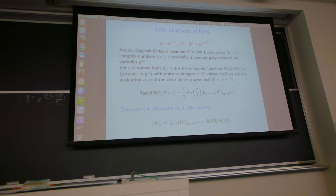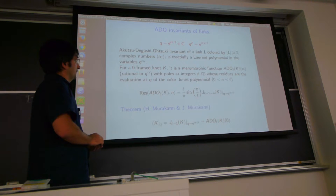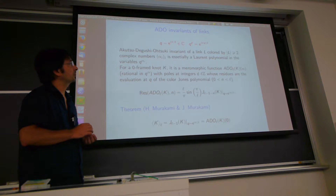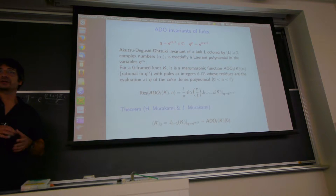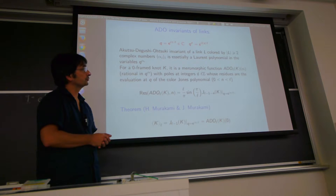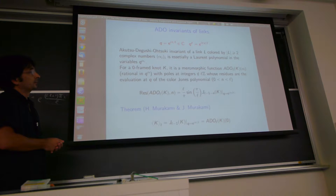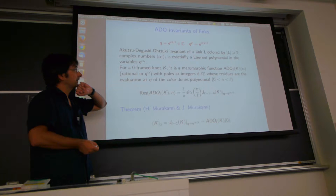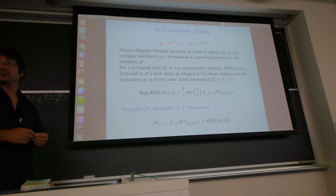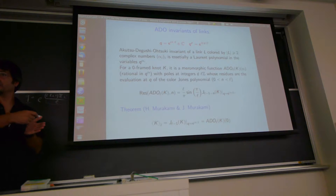This is important because we will have a key relation here. The ADO link invariant, defined by Akutsu, Deguchi, and Ohtsuki, when you have a link with at least two components colored by complex numbers, is essentially a Laurent polynomial in the variable Q^{z_i} · alpha_i. For a zero-framed knot, it is a rational function in Q^{z alpha_i}, and its poles at integers have residues which are the colored Jones polynomials. So the ADO function contains the colored Jones polynomial as its residue, specifically the evaluation of the colored Jones polynomial at the root of unity.